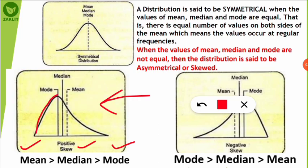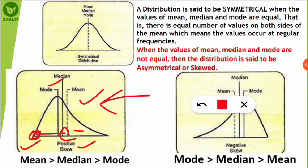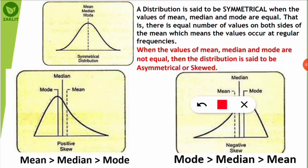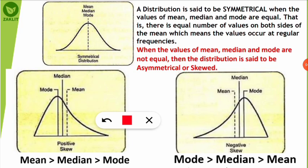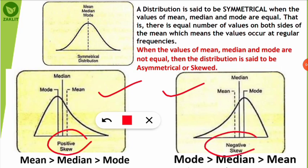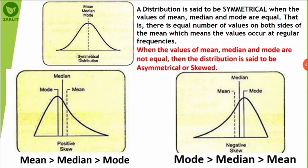Let's analyze these two graphs. For the positively skewed distribution, the mean is greater than the median, and the median is greater than the mode — so mode is the least. Looking at the x-axis, values farther from zero have a greater value; since mean is farthest from the zero point, it has the most value, followed by median, then mode. For the negatively skewed distribution (the graph on the right), mode has the maximum value, followed by median, then mean — because mean is closest to the zero point. From graphs, you should be able to identify whether a distribution is positively skewed, negatively skewed, or symmetrical.